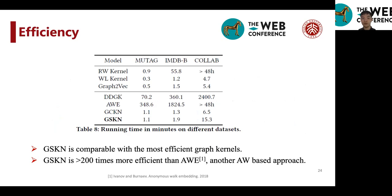which shows that GSKN is highly scalable in real-world applications. And also, GSKN is more than 200 times more efficient than the anonymous walk embeddings, AWE, which is another anonymous walk-based approach, which shows the power of our model over AWE.